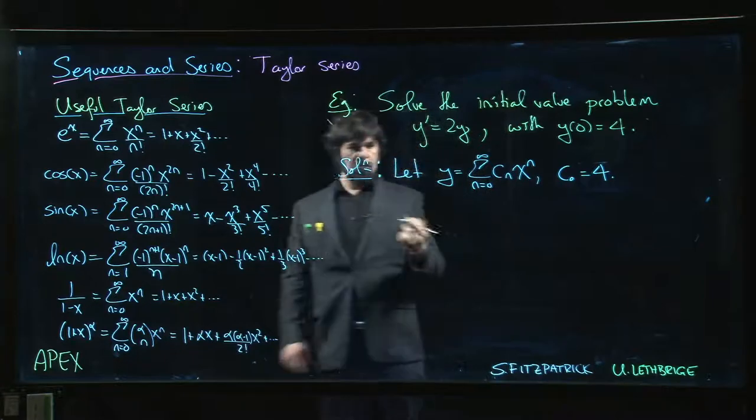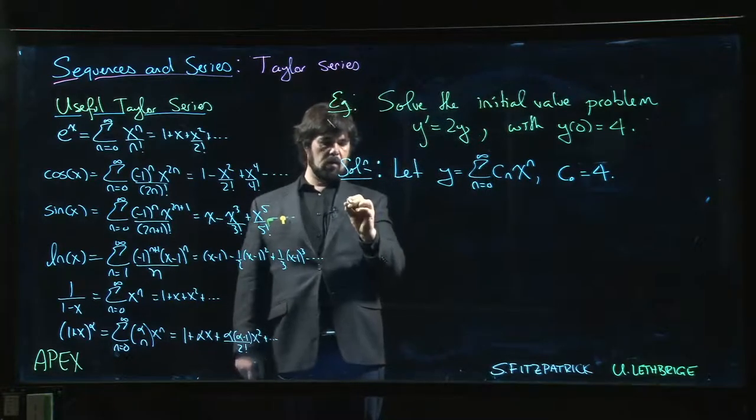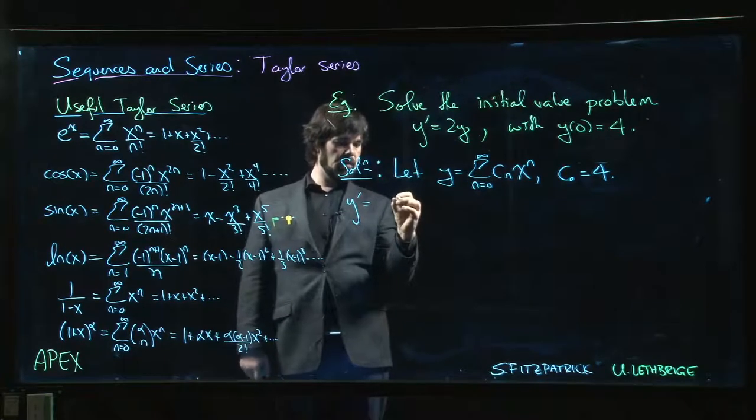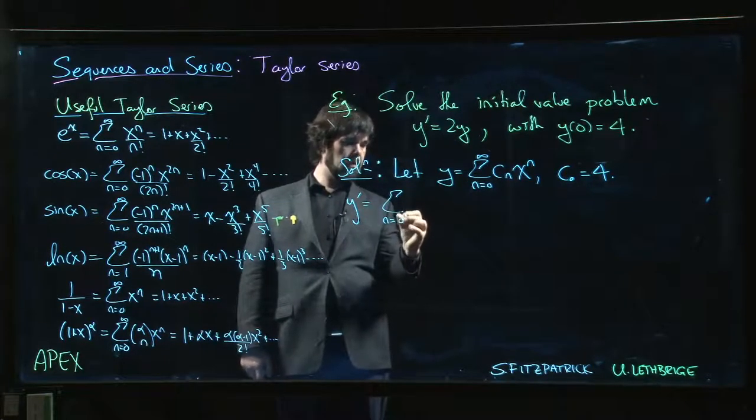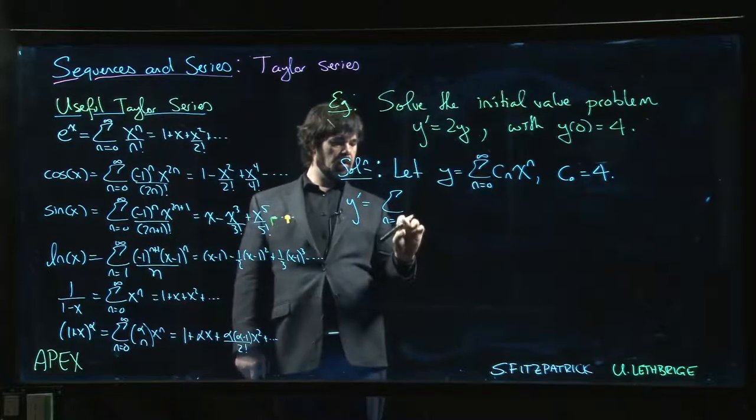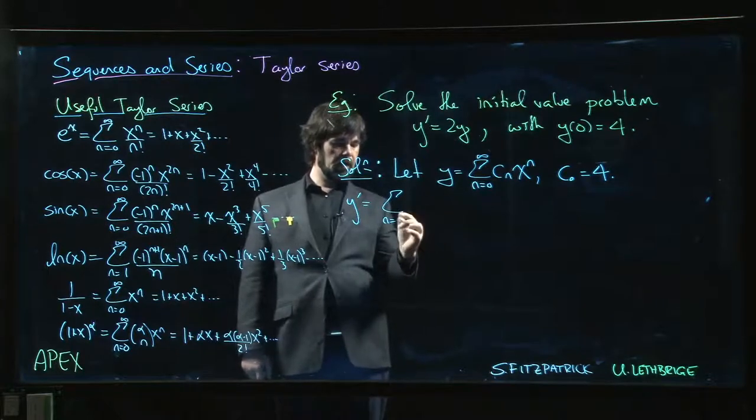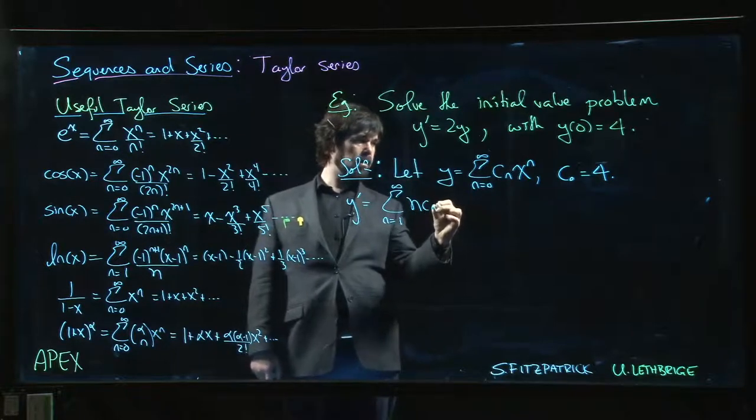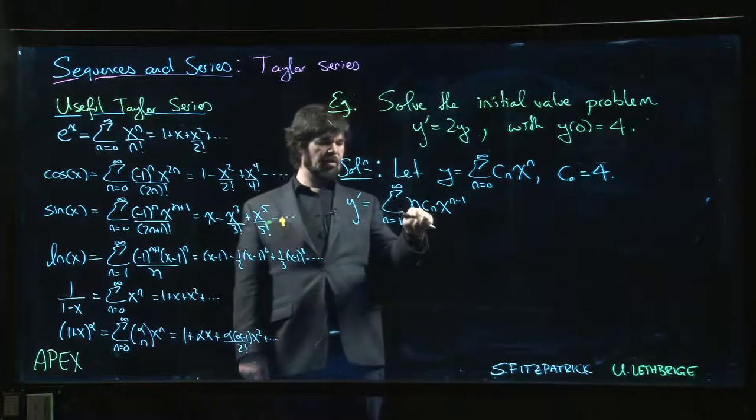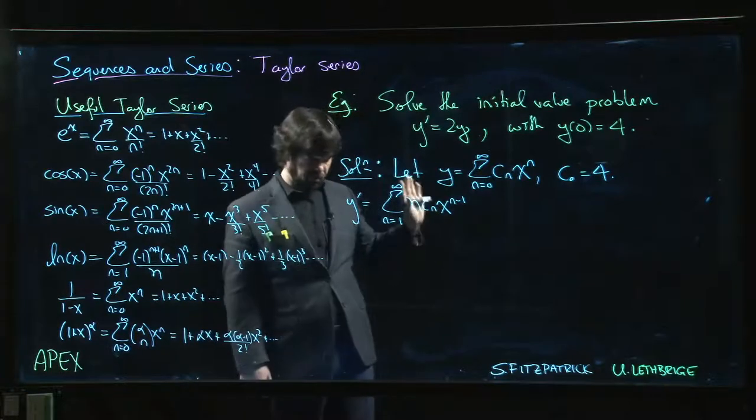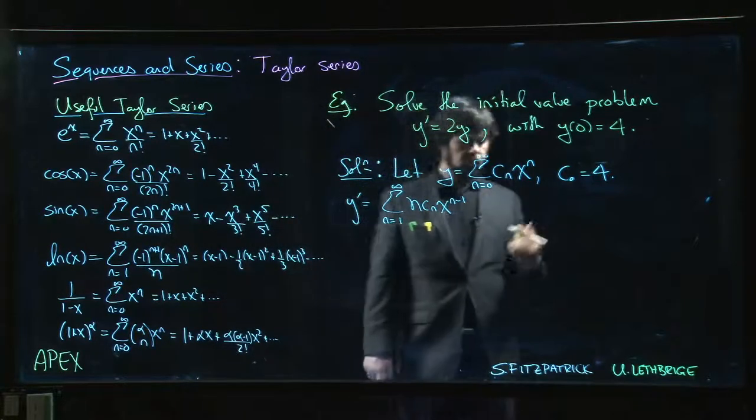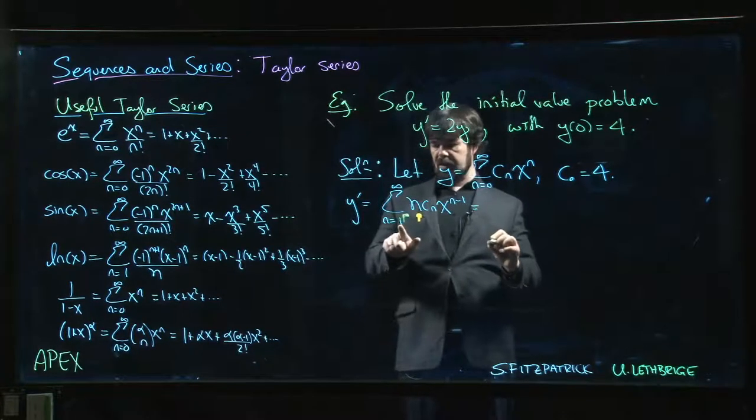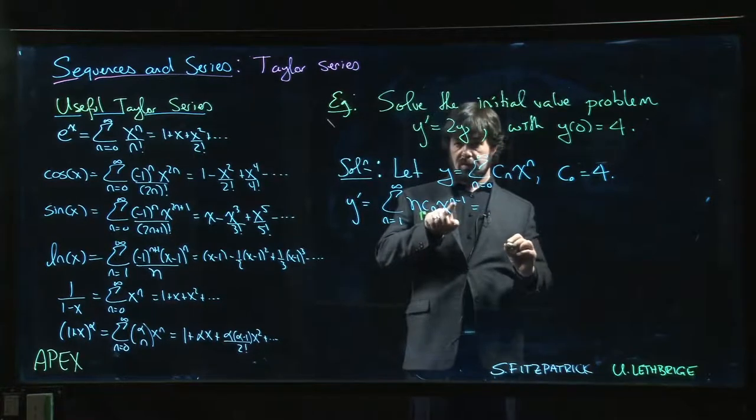The other thing I know is that y prime, on the one hand I can take the derivative term by term. I get the sum going from 1 to infinity of n c_n x to the n minus 1. The n equals 0 term is gone, the constant term goes away. But we can re-index this. If I drop that index by 1, I've got to increase the value of n over here to compensate.